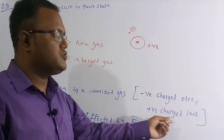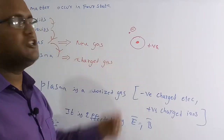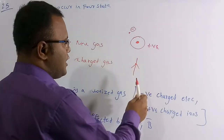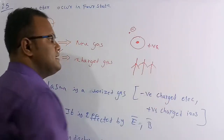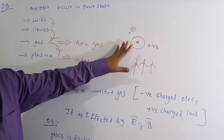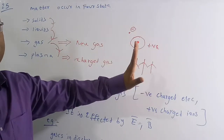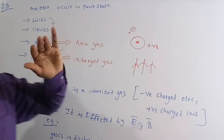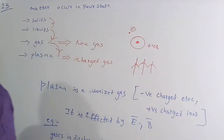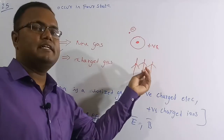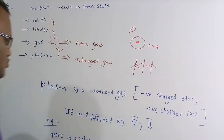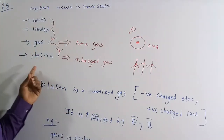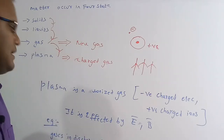Because plasma has charged ions, it is affected by electric fields and magnetic fields. A neutral gas has no effect on electric or magnetic fields, but plasma gas is affected by both electric and magnetic fields because of its charged ions.